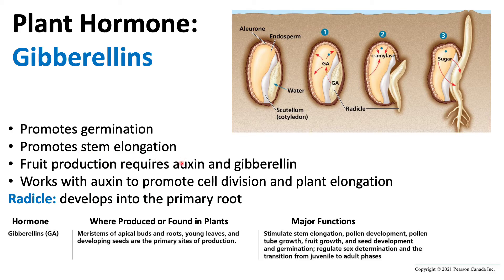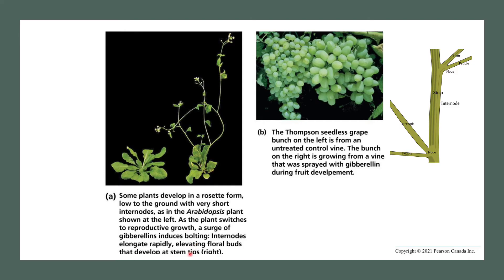Auxin, gibberellin, and cytokinin are all hormones involved in plant growth, but gibberellins are specifically needed for the initial germination and stem elongation. The radicle is what develops into our primary root. Since gibberellins promote elongation and growth, if we were to take a dwarf plant — a very short plant — and spray it with gibberellins, we would see the dwarf plant start to elongate.